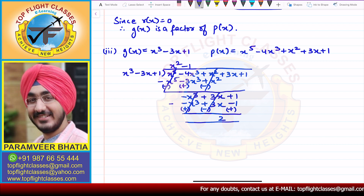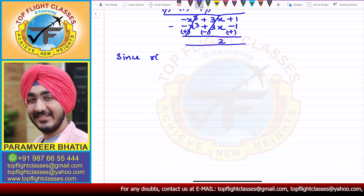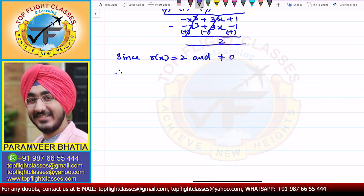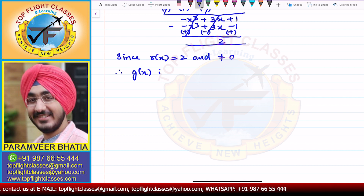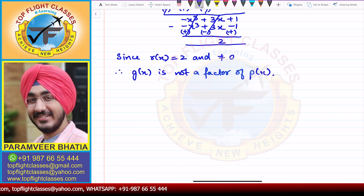Since r(x) = 2, which is not equal to 0, therefore g(x) is not a factor of p(x). This is what is required in this question.